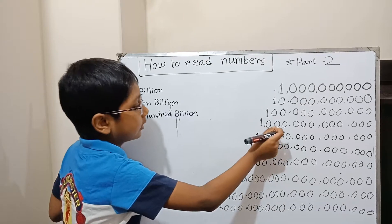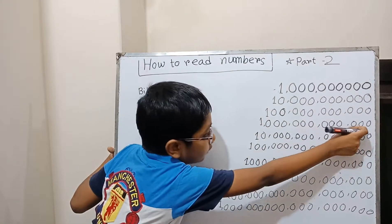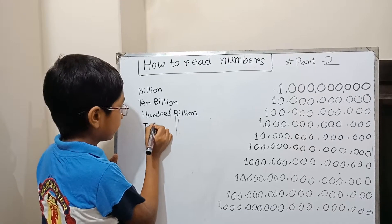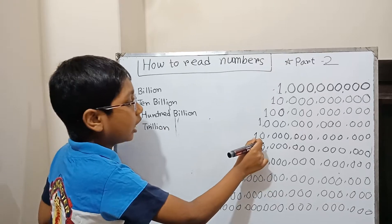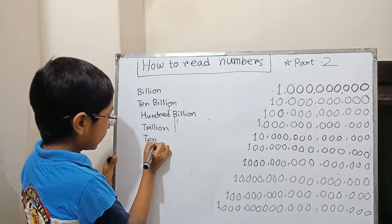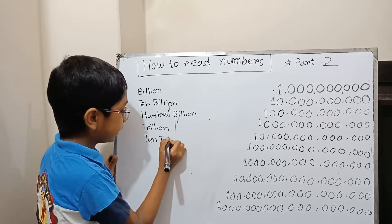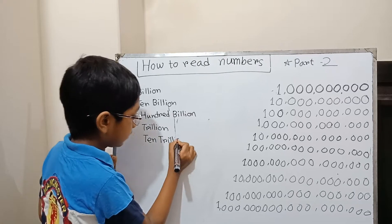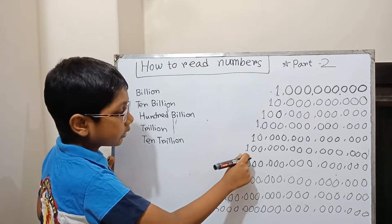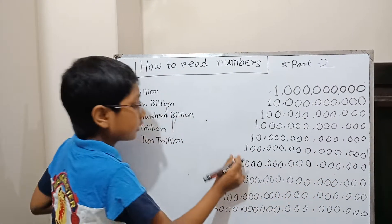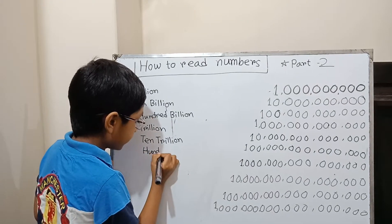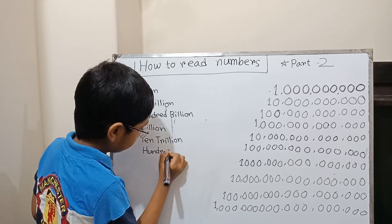One and twelve zeros means trillion. One and thirteen zeros means ten trillion. One and fourteen zeros means hundred trillion.